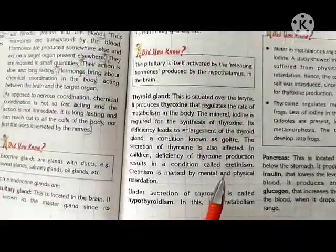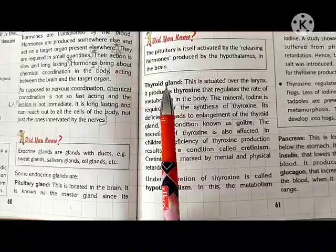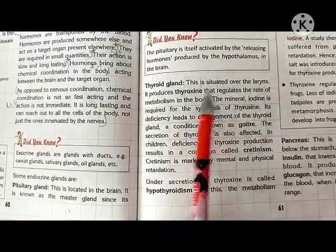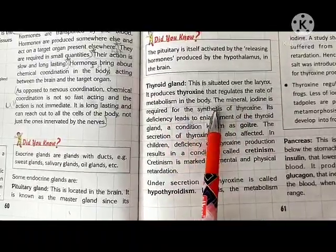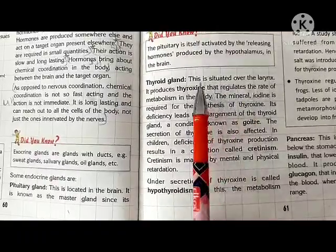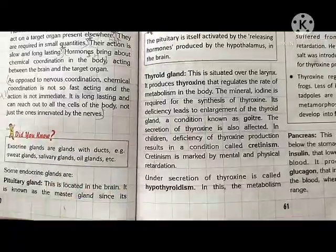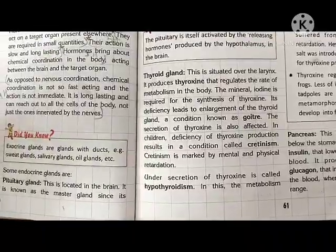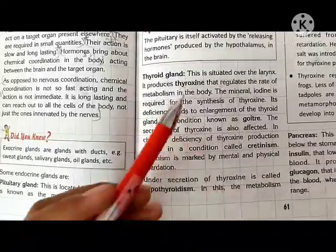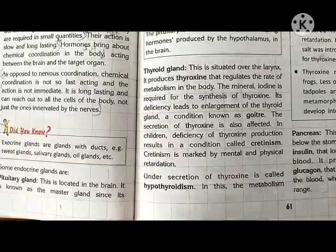The thyroid gland secretes thyroxin, which regulates the rate of metabolism in the body. Metabolism means the reactions taking place inside our body, and thyroxin regulates that rate — it increases, decreases, or maintains that rate.